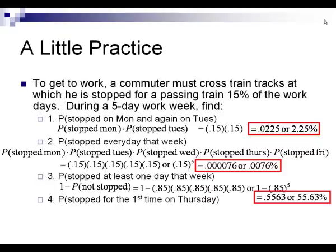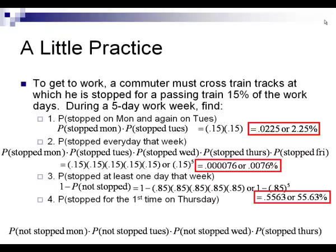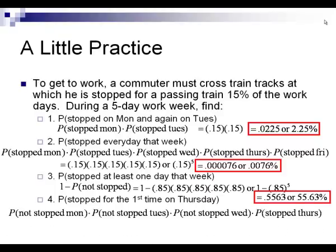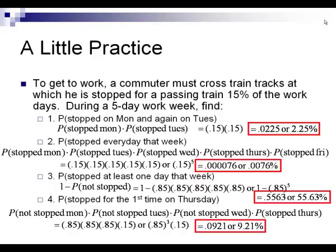Number 4: the probability of getting stopped for the first time on Thursday. That means you were not stopped on Monday, not stopped on Tuesday, not stopped on Wednesday, but yes, stopped on Thursday. So: 0.85 × 0.85 × 0.85 × 0.15, also written as 0.85³ × 0.15 = 0.0921, or 9.21%.